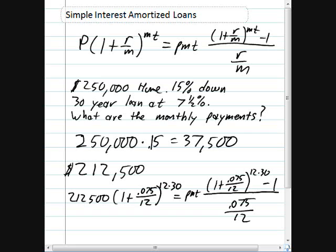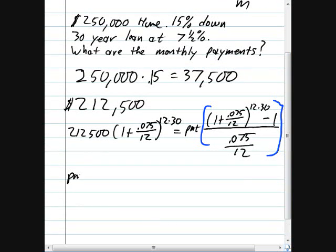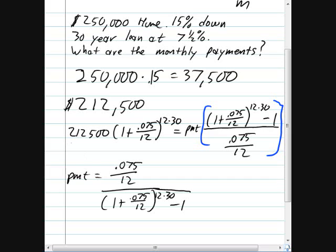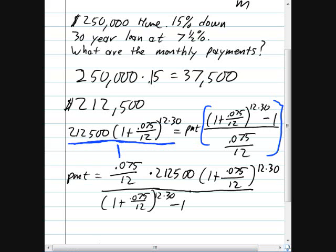So now we can solve for payment by dividing both sides of the equation by this fraction. And we get that payment equals, remember when you divide by a fraction, you flip and multiply. The entire left side of the equation can be considered to be over 1. So when we multiply, it ends up in the numerator. And if we work this out on our calculator, we find that the monthly payment should be $1,485.83 when rounded to the nearest penny.